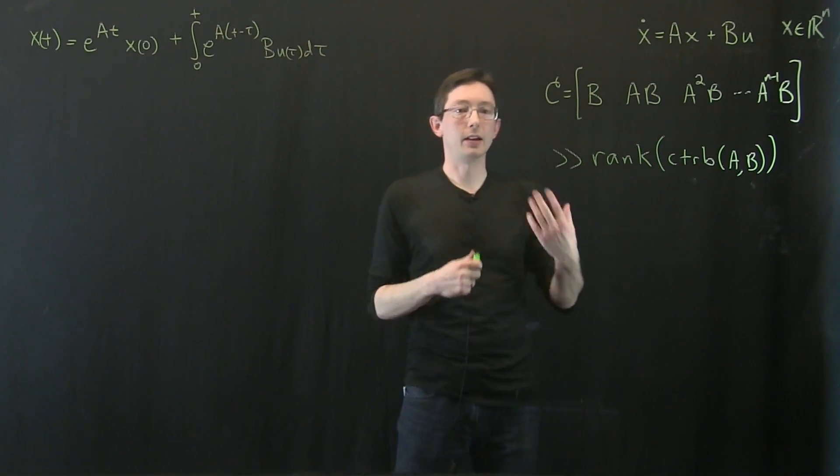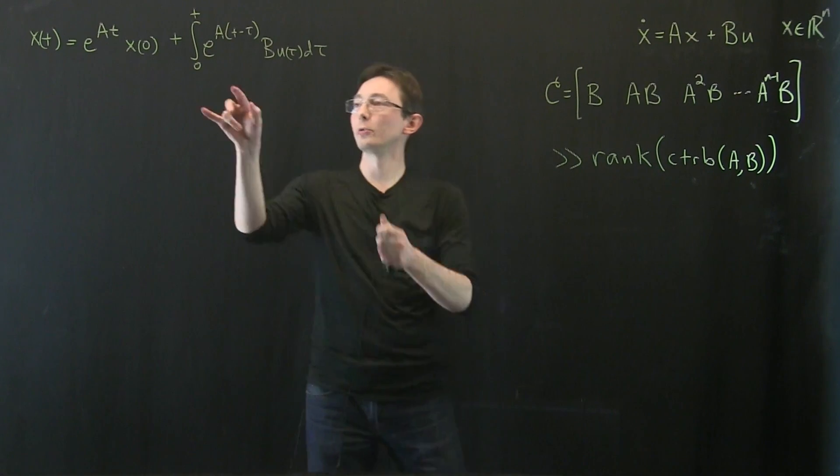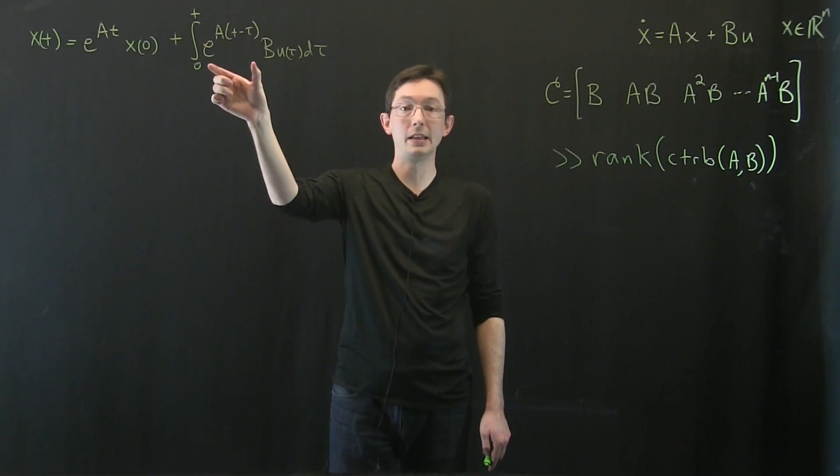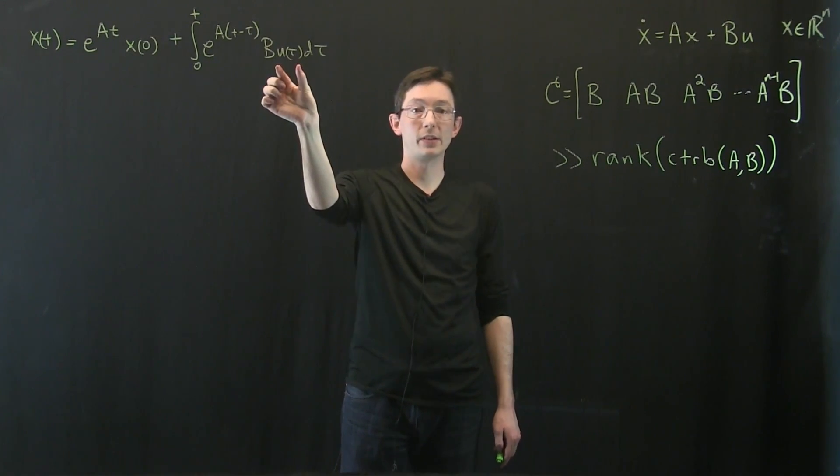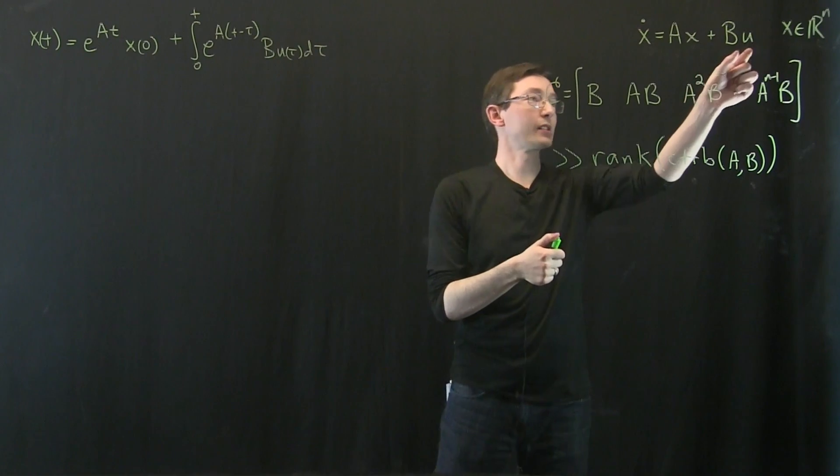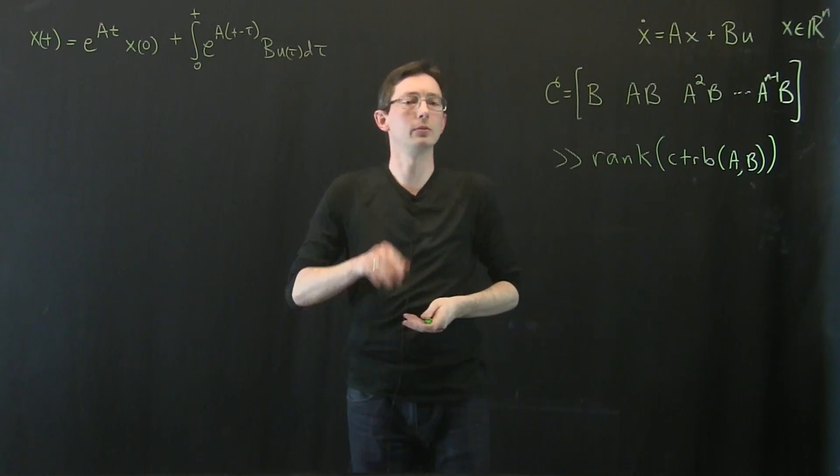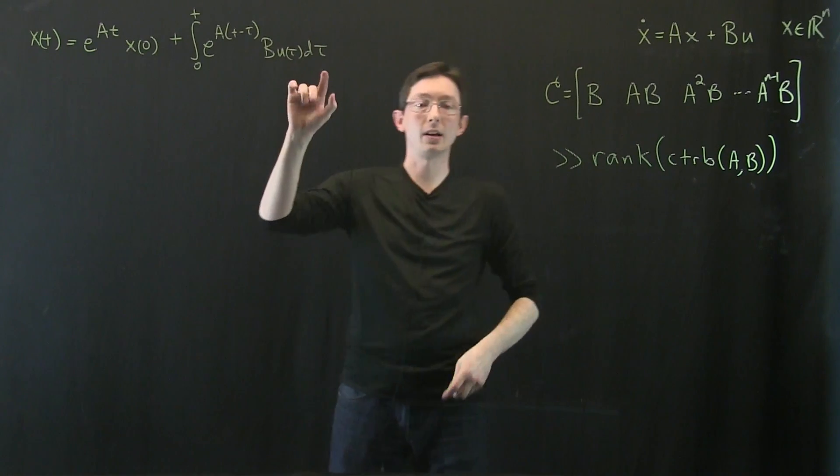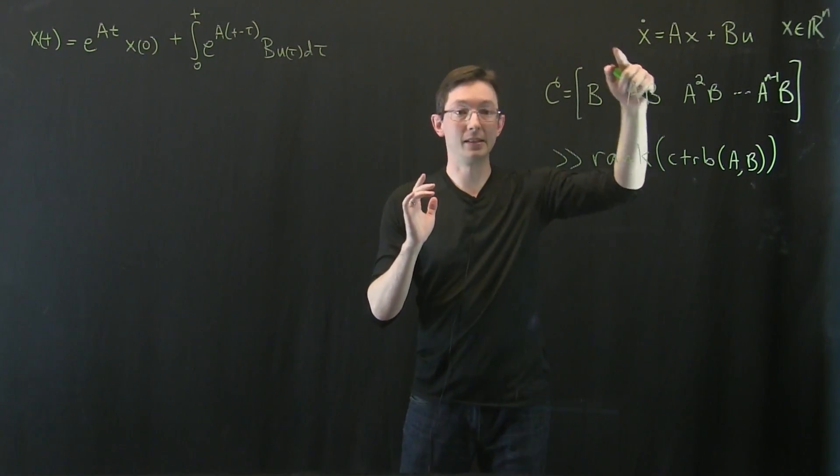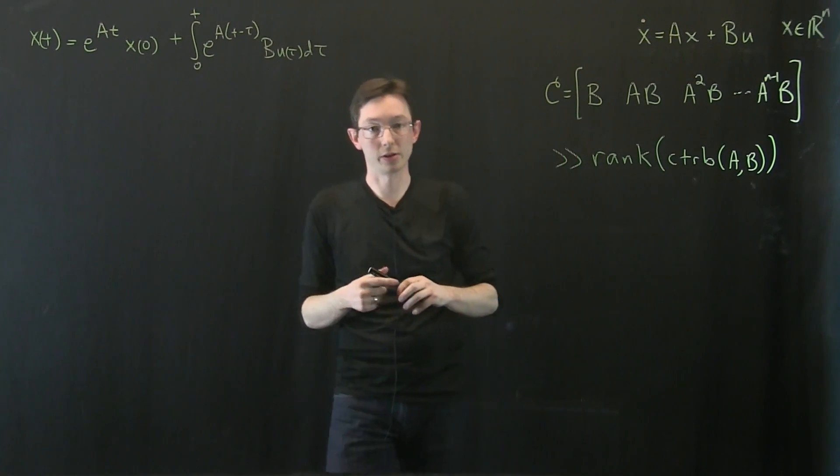And for those of you who have dealt with impulse responses and linear systems before, you'll recognize that this is the convolution of e to the At with our input u. So essentially this e to the At is kind of a kernel and we're sliding our control input u across that kernel and convolving. But we'll get into that later on when we talk about the equivalence of state space differential equations with impulse response convolution representations and transfer functions.